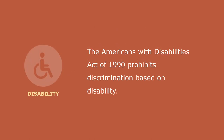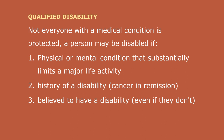The Americans with Disabilities Act of 1990, known as the ADA, prohibits discrimination based on disability. Not everyone with a medical condition is protected by the law. In order to be protected, a person must be qualified for the job and have a disability as defined by the law. A person can show that he or she is disabled in one of three ways: a person may be disabled if he or she has a physical or mental condition that substantially limits a major life activity, such as walking, talking, seeing, hearing, or learning; a person may be disabled if he or she has a history of a disability, such as cancer that is in remission; and a person may be disabled if he or she is believed to have a physical or mental impairment that is not transitory — lasting or expected to last at least six months — and minor, even if he or she does not have such an impairment.